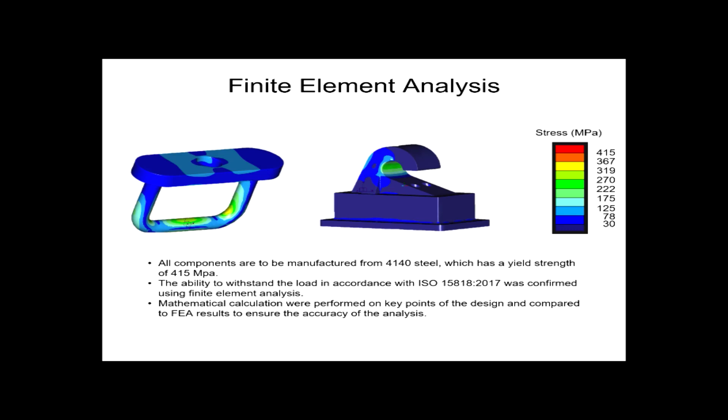Mathematical calculations were also performed at critical stress concentrations, like the inside curve of the hook, to correlate the FEA results and ensure accuracy. The inside curve of the hook had its highest stress concentration at about 300 MPa, which is less than the yield strength for 4140 steel.